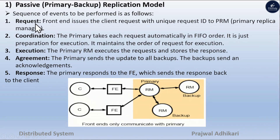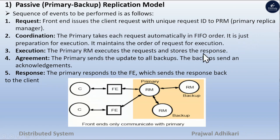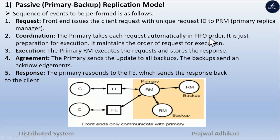In the passive replication model, there is a sequence of events to be followed. First, Request: the front end issues the client request with a unique request ID to the primary replica manager. Coordination: the primary takes each request atomically in FIFO order.